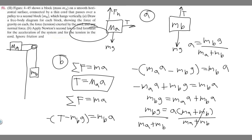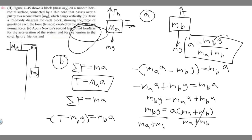So this right here is your answer — the formula for the acceleration of this system: acceleration equals M sub B times G over M sub A plus M sub B. You'll use this in the next problem. Hopefully you found this useful.